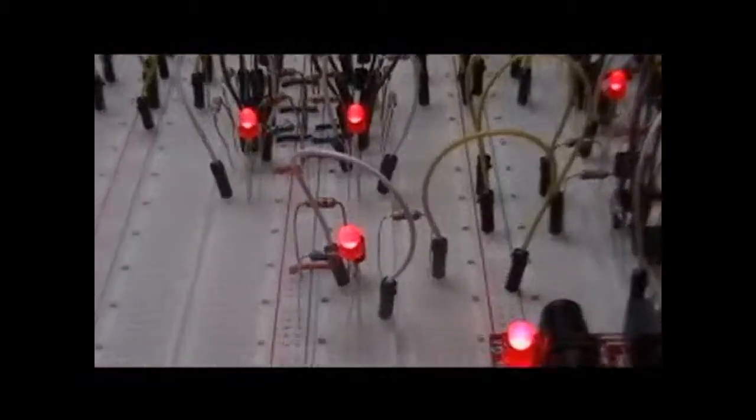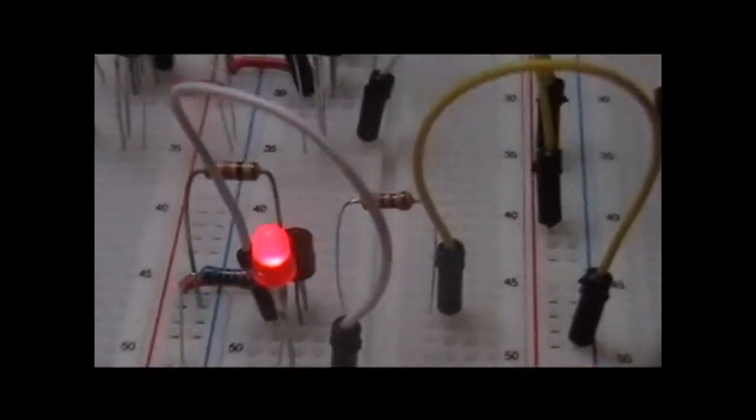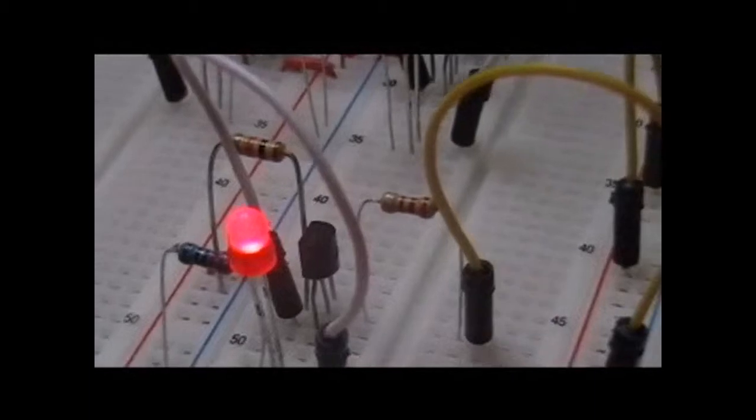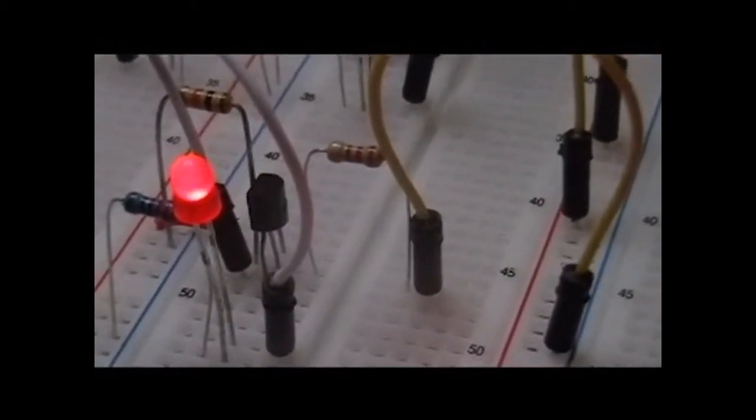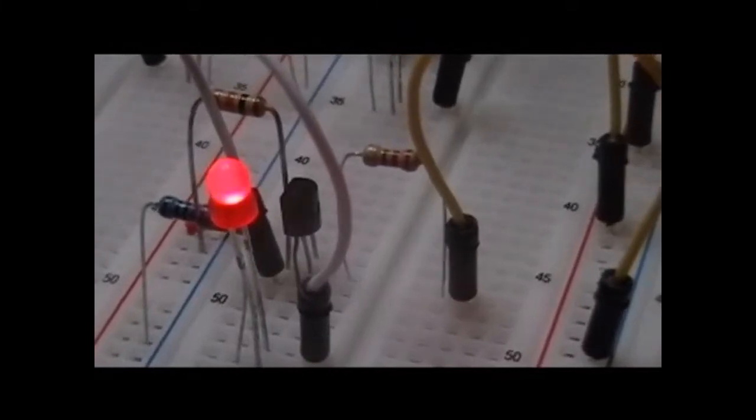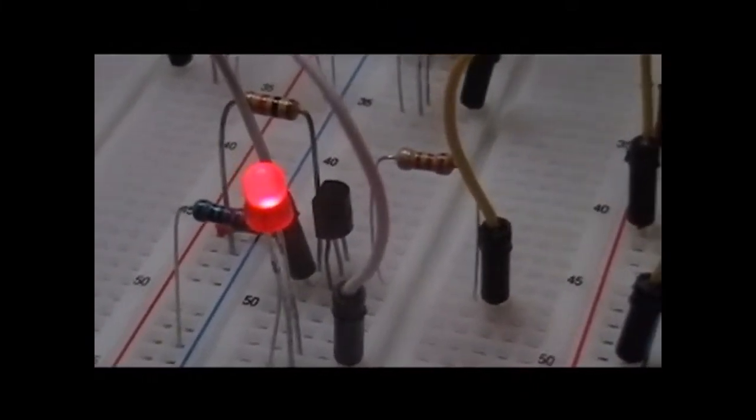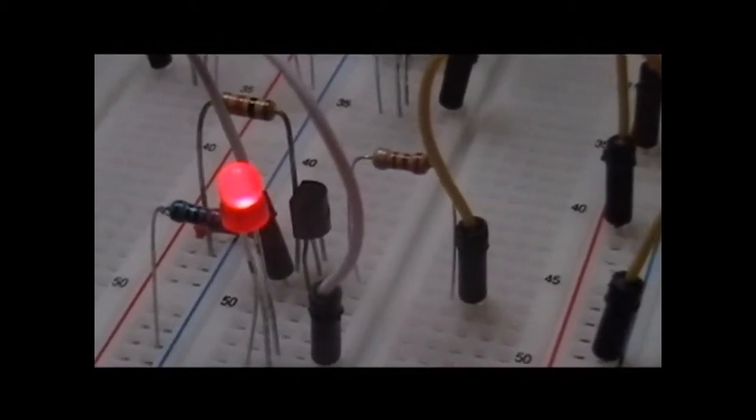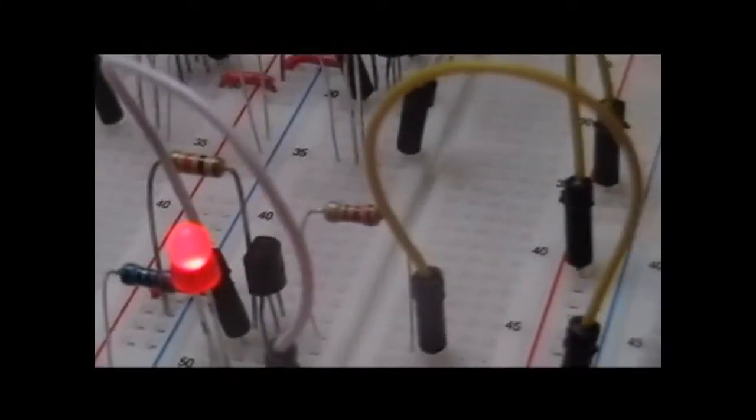So we're going to look at this particular gate right here. What it consists of, if I move around this way a little bit, you'll see there is a transistor in here. In this case, it's a PNP transistor, and its purpose in this particular circuit is to invert the incoming signal.